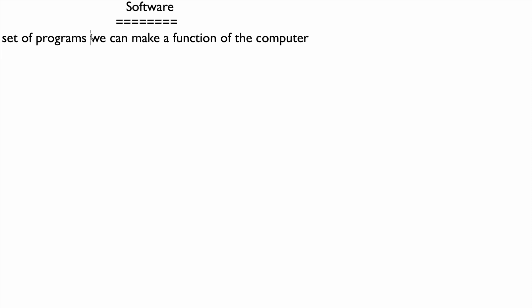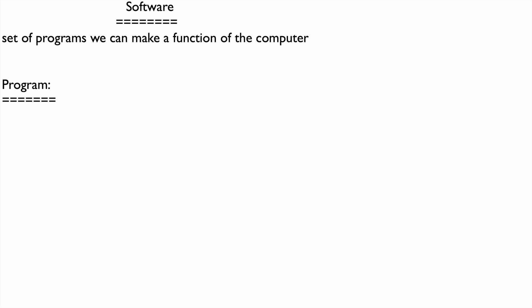A function made from those programs is called software. What is a program? A program is nothing but a set of instructions. The instructions are arranged in a sequence, step by step, to solve a given problem.